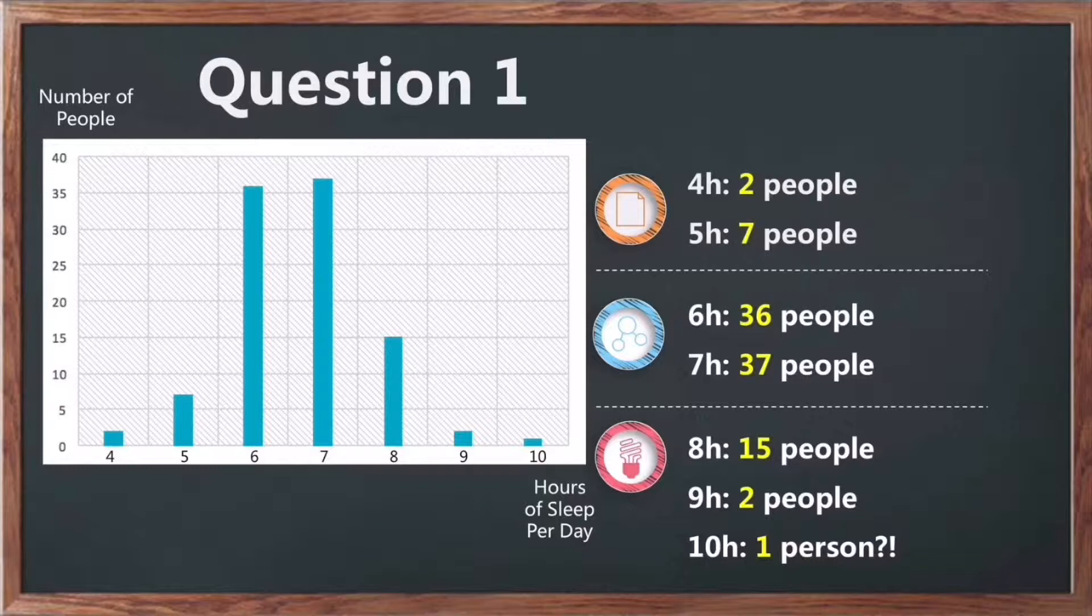For the first question of the average sleeping hours, the results show that 9% of the people sleep for only 4-5 hours, which is considered as lack of sleeping. In the medium level of 6-7 hours of sleeping, there are totally 73% of people. As for more than 8 hours of sleeping, there are only 18% of the people, and 10 hours only has 1.